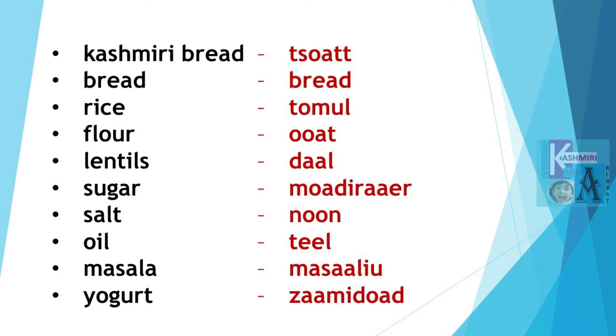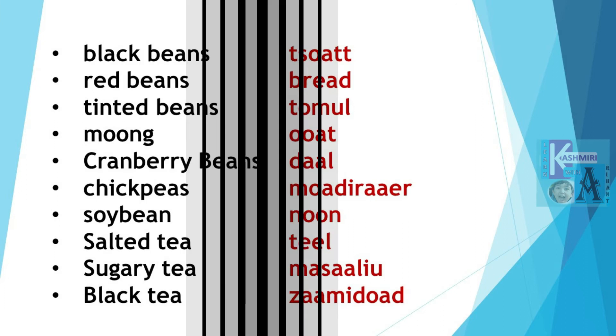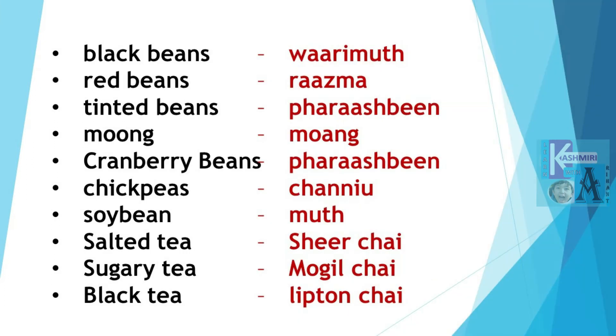Yogurt is Zaamudot. Zaamudot. Black Beans are Warimut. Warimut.